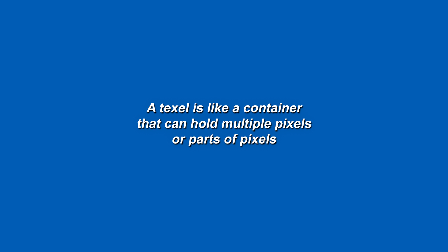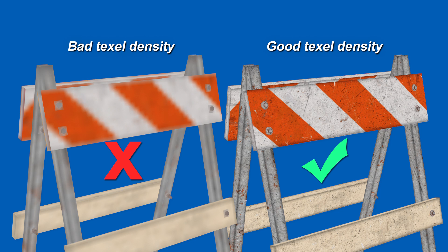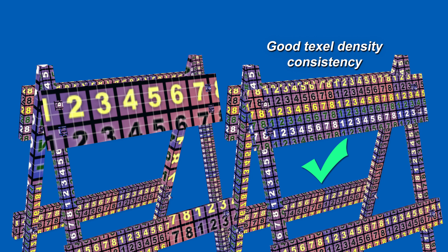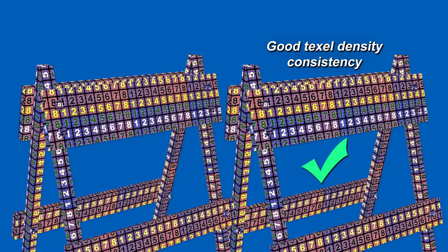What you really care about is getting the highest and most consistent texel density when you UV map your models. Here you can see bad texel density on the left and good texel density on the right, and here you can see bad texel density consistency versus good texel density consistency. Always aim for high texel density that's consistent across all the models in your scene, because it looks really bad when your assets have different texel densities.